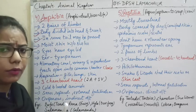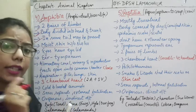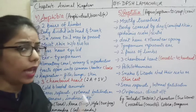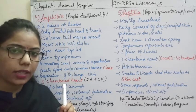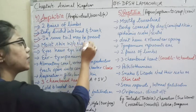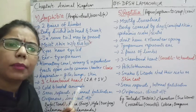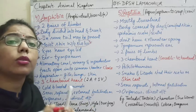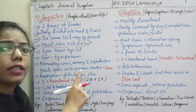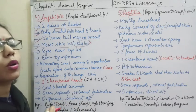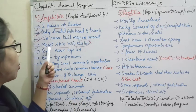The skin of amphibians is moist with no scales — unlike fishes which have scales. The moist skin allows them to respire through their body surface, a process known as cutaneous respiration. This is one of the methods of respiration in amphibians. That is why their skin remains moist.